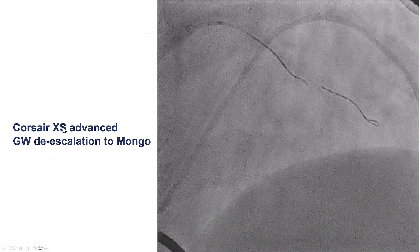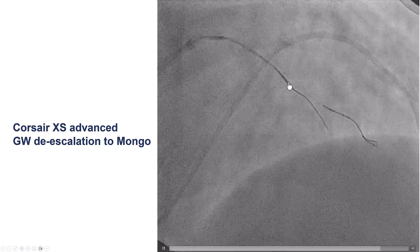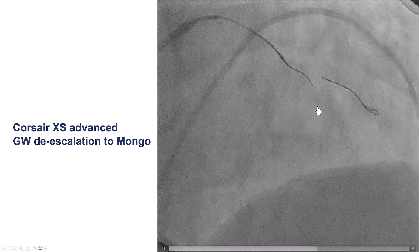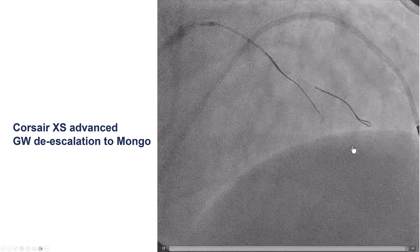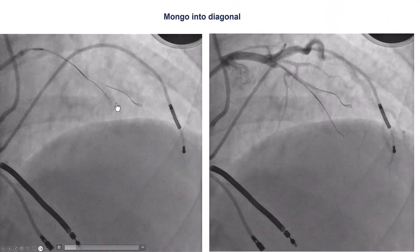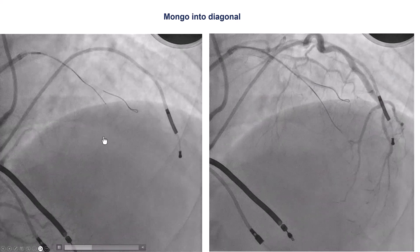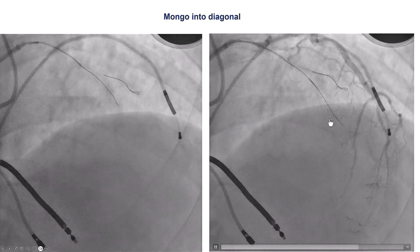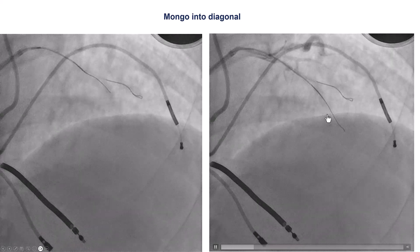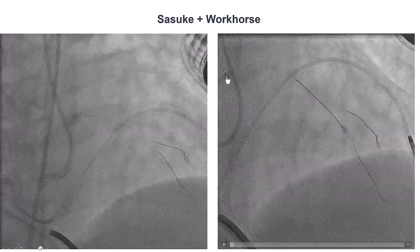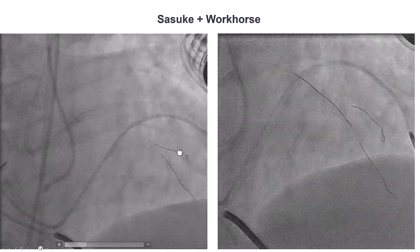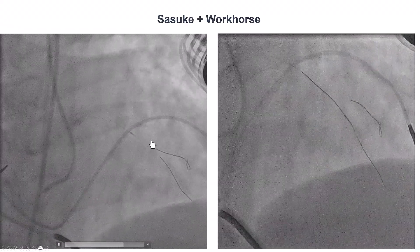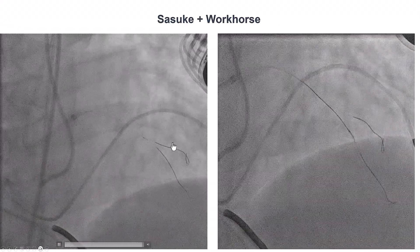We then advanced the microcatheter and de-escalated to a softer wire — a Gladius Mongo — that appeared to advance along the course of the vessel. On contralateral injection, we can see the wire going along the vessel course; however, the wire went into the diagonal originating at the distal cap. So what to do next? One option would be to pull back the side branch wire and redirect it, but that may lead to loss of wire position.